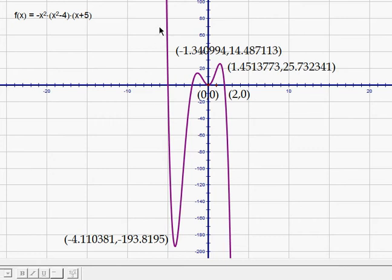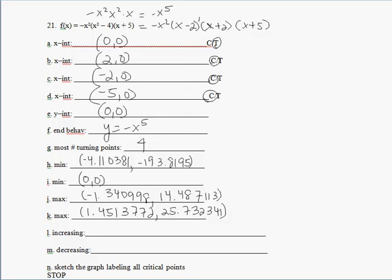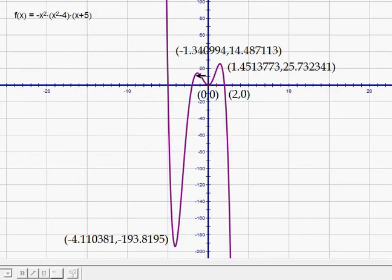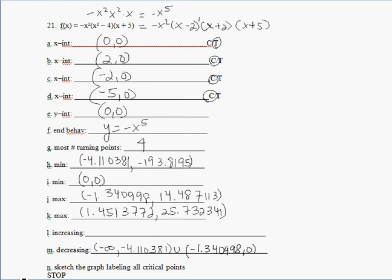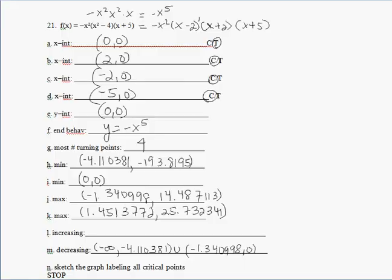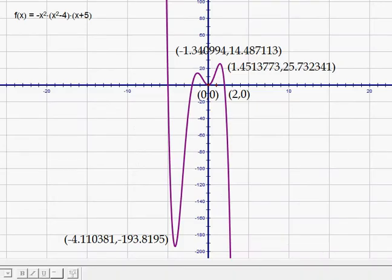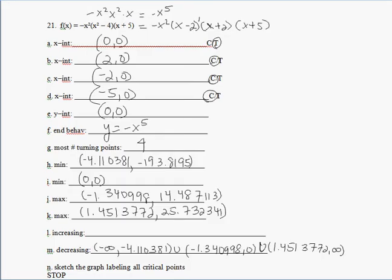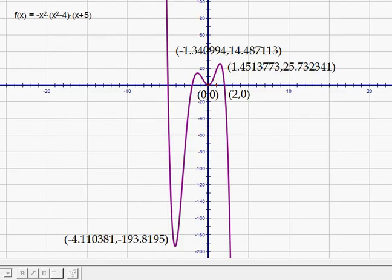So let's do our decreasing intervals from negative infinity to negative 4.11. So there's our first decreasing interval. Our next decreasing interval will be from negative 1.34 down to the origin. And then let's check out our last decreasing interval. From 1.45, it's going down. So it's from 1.45 out to positive infinity. Those are my x values where my function is going down. So now let's look at our increasing intervals. It's increasing from negative 4.11 up to negative 1.34. And let's check out our next increasing interval. Looks like it's from the origin to 1.45.